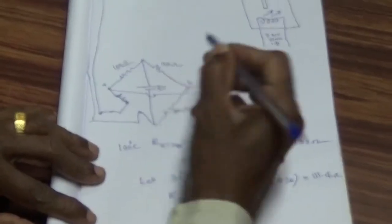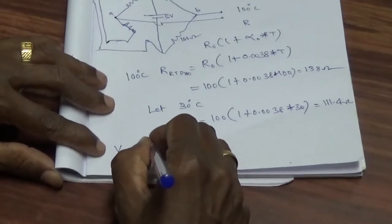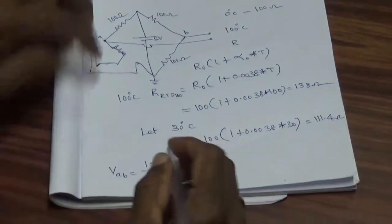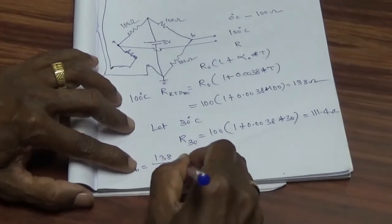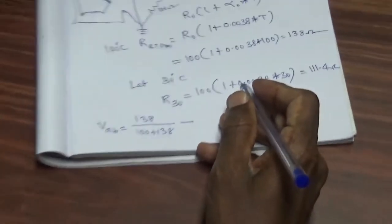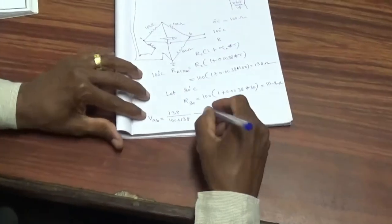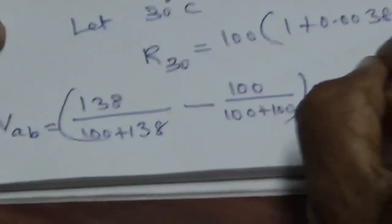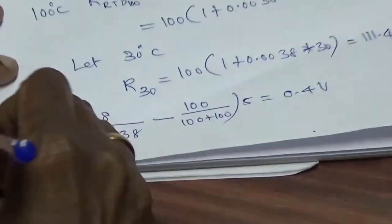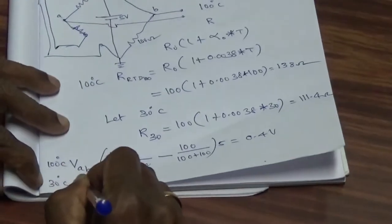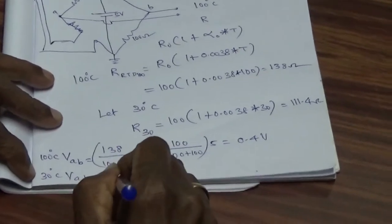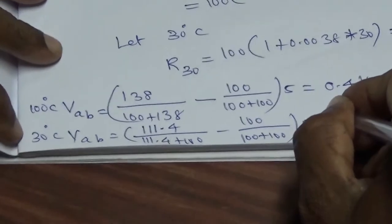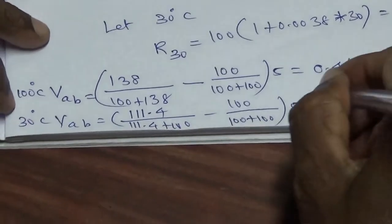Let the output voltage across AB be found. V_AB = (138 / (100 + 138)) × 5 minus the potential at the other point, which is 2.5 volts because both arms are 100 ohms — that is (100 / (100 + 100)) × 5. This equals 0.4 volts for 100 degrees centigrade. Similarly, for 30 degrees centigrade: (111.4 / (111.4 + 100)) − (100 / (100 + 100)) × 5 = 0.138 volts.